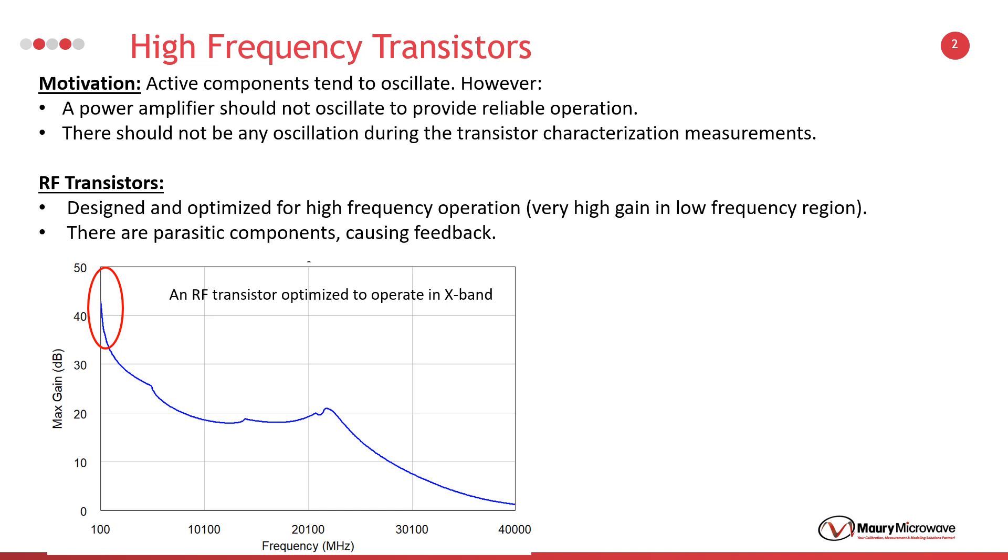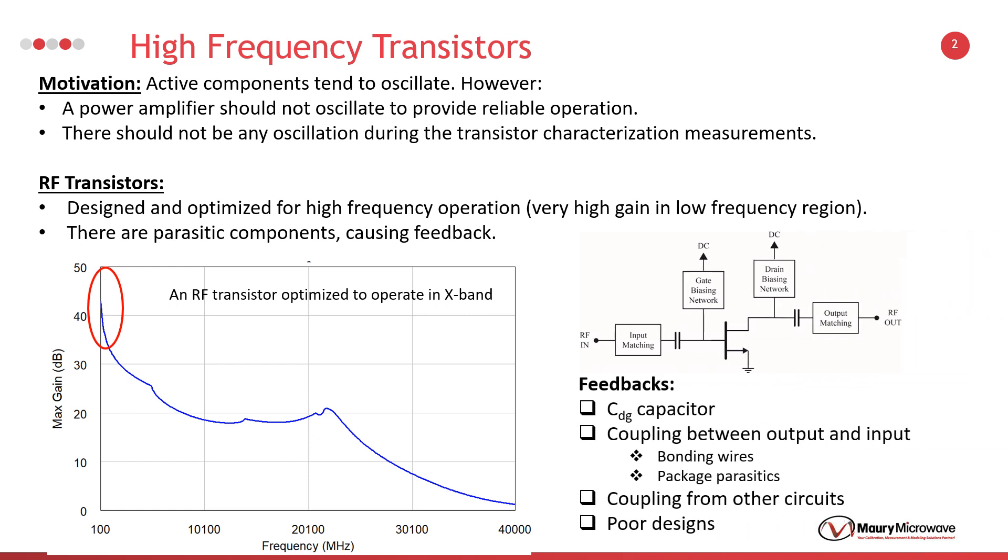There are several feedback loops in a device under test or measurement setup that we previously explained in the first presentation. It is obvious that we cannot change the device under test's physical structure, such as drain gate capacitance and bonding wires in the package. However, it is possible to prepare an improved measurement setup to control some of the feedback loops to avoid oscillations. In this presentation, we will focus on the low frequency response of a transistor and how to control it.